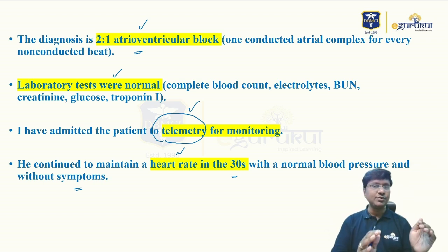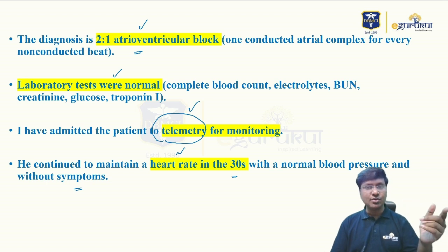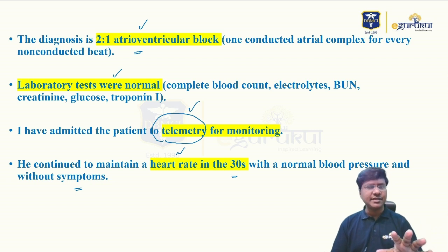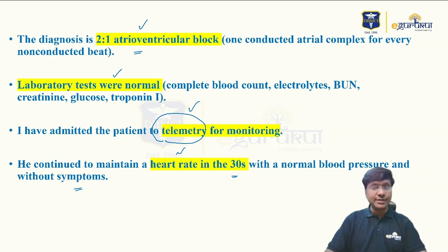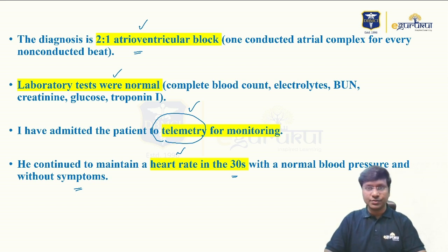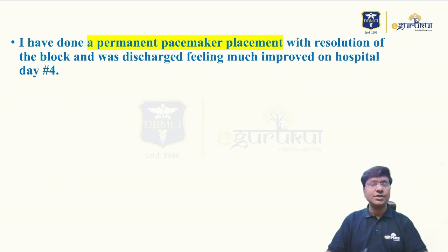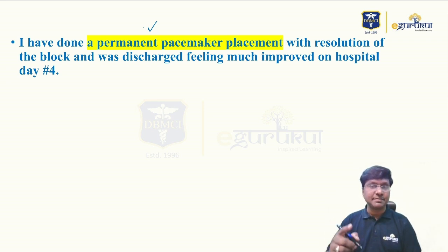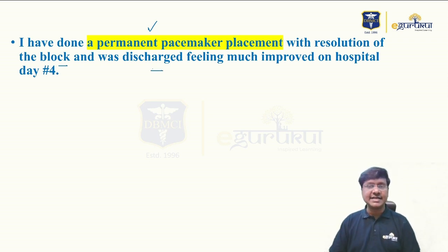Now what should you do? While at home during activities he was having fatigue and lightheadedness, and in the telemetry unit at rest his heart rate was only 30 per minute. Do you think giving atropine alone would resolve a Mobitz Type 2 AV block? No. Mobitz Type 2 carries the worst prognosis. So I performed a permanent pacemaker placement, which resolved the block, and he was discharged feeling much improved on hospital day 4.